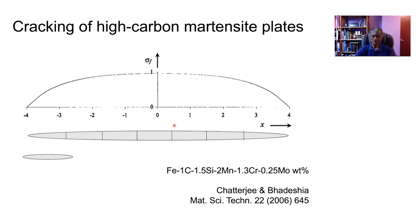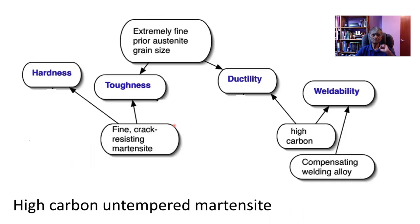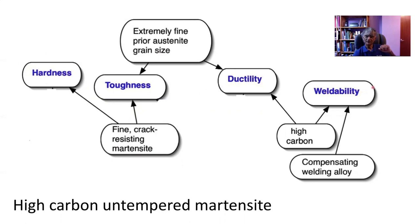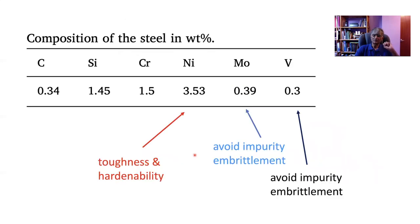Going back to our original goal: we want an extremely fine prior austenite grain size, high hardness, toughness, and fine crack-resisting martensite. In terms of hardness, we are aiming for something like 650 Vickers hardness, achievable with a carbon concentration of about 0.48% in the untempered state. We want ductility and weldability, which limits the maximum carbon concentration to about 0.4 weight percent. After some calculations and experience, we came up with an alloy composition with approximately 0.35 weight percent carbon.